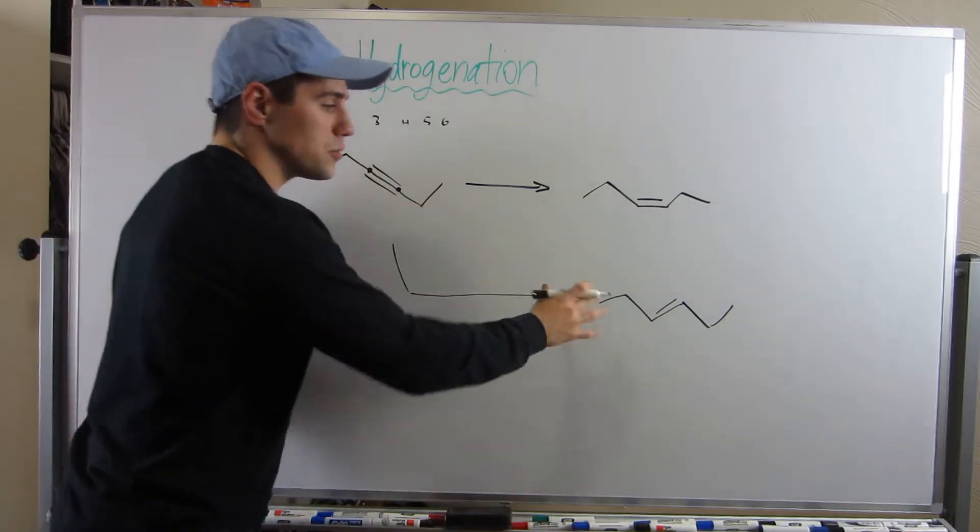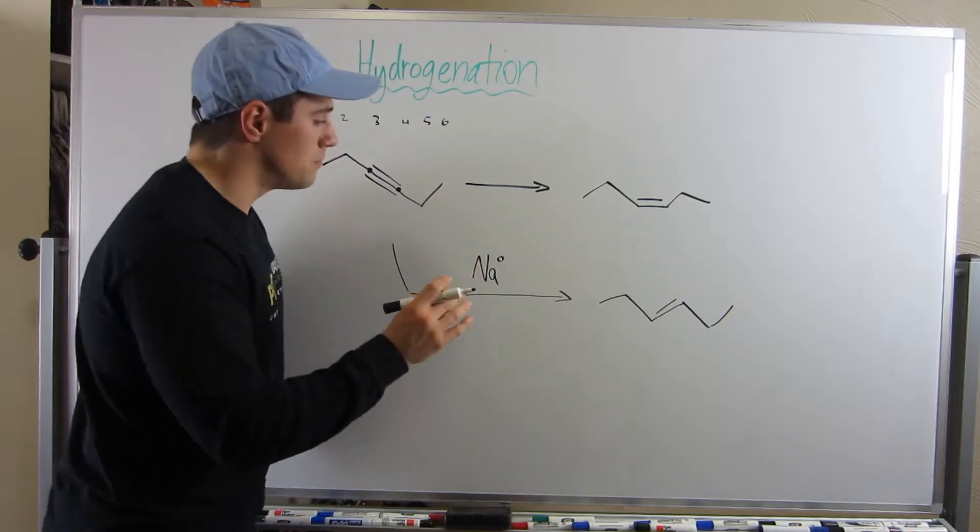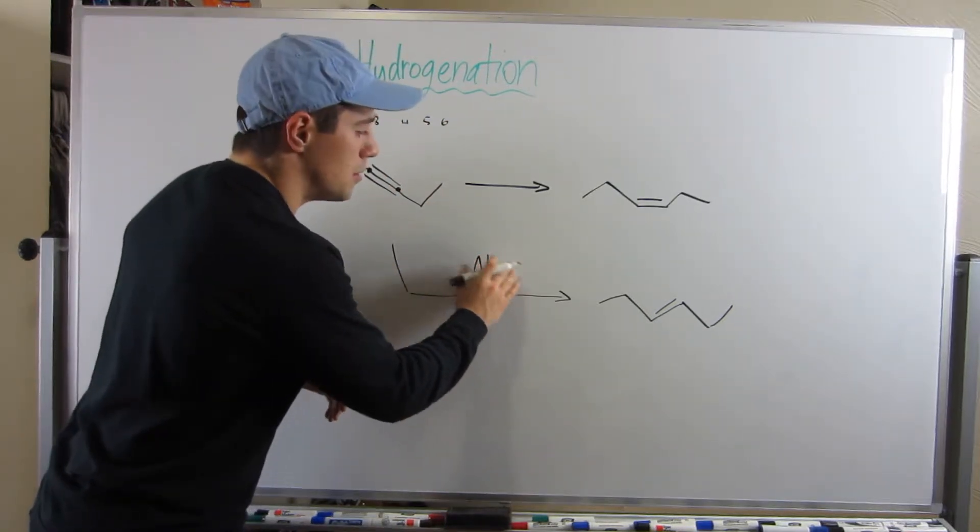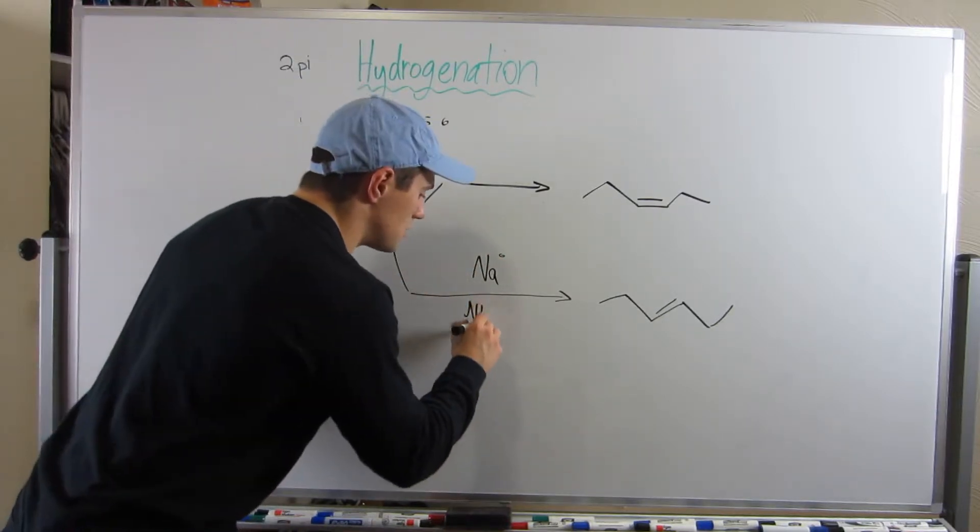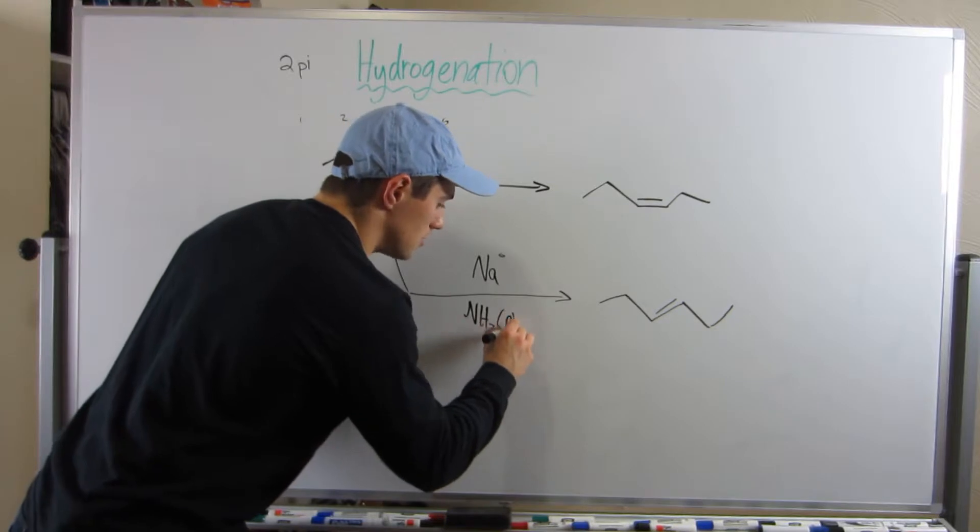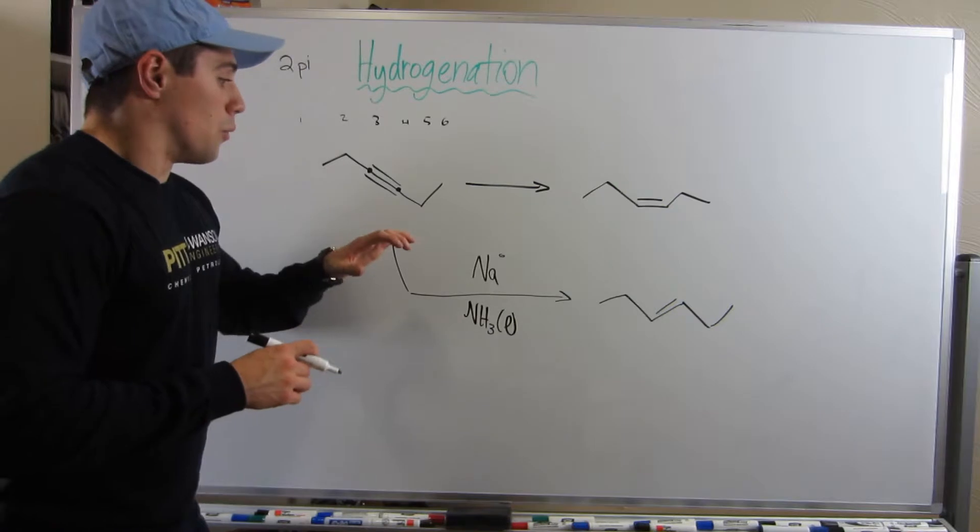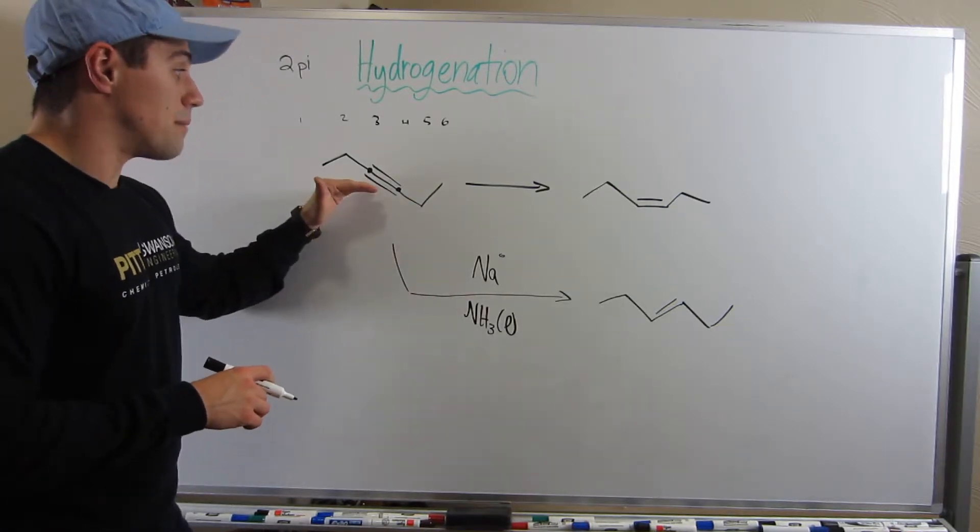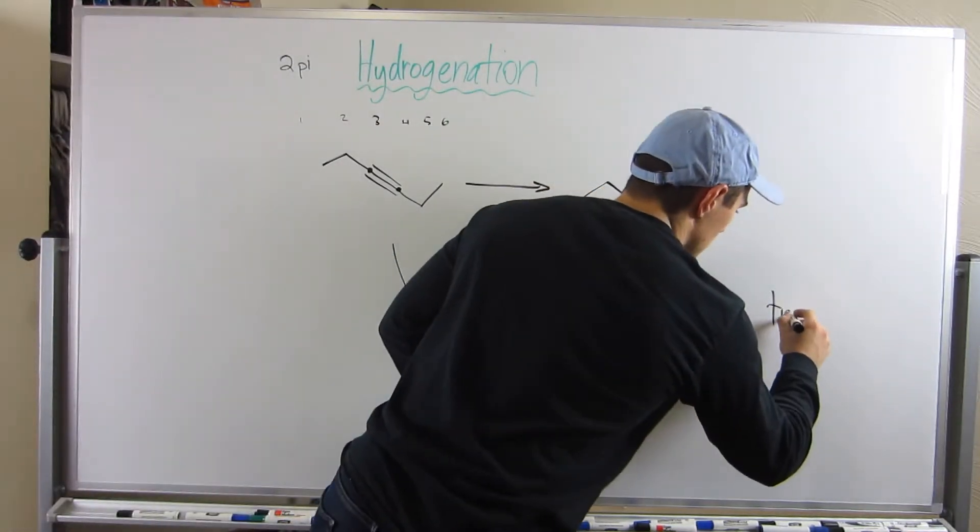To basically hydrogenate a triple bond to a trans double bond, you'll see these reagents. Elemental sodium, and maybe you see Na without the zero up top. But if you do, it just means regular old elemental sodium. And you'll see liquid ammonia. So that's important. Don't forget that little liquid qualifier. It actually matters. When you see a triple bond, you see these sets of reagents, you know you're going to step down from a triple to a double bond. But more specifically, the trans double bond.